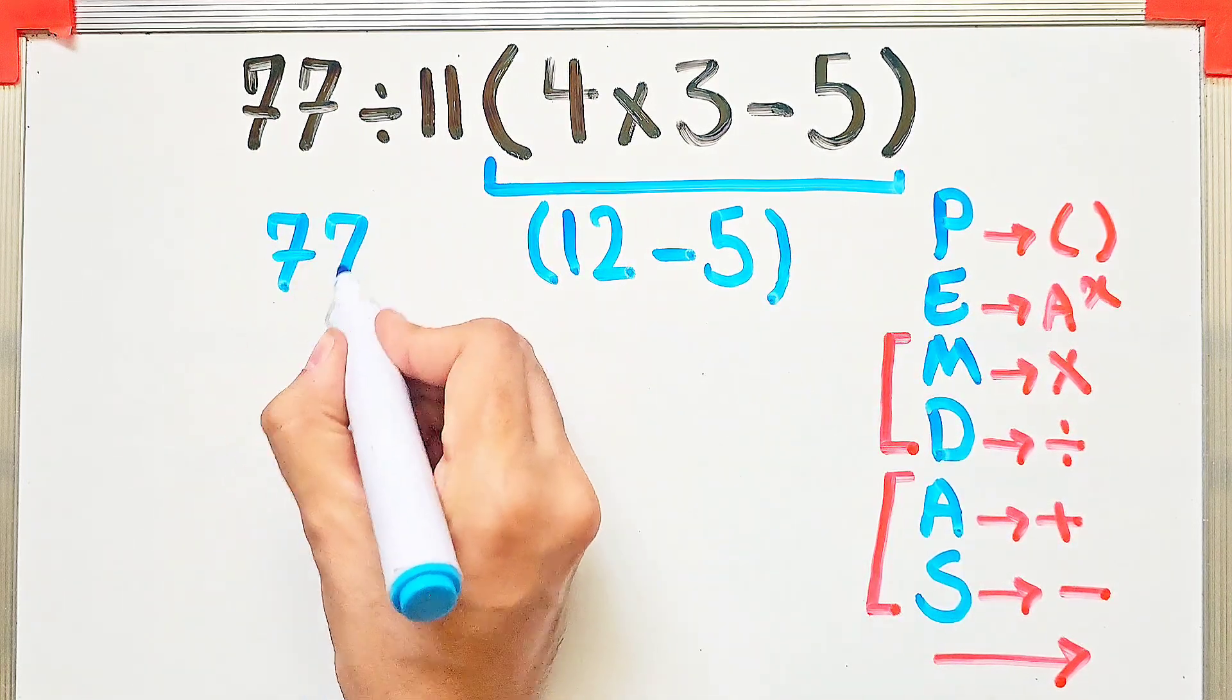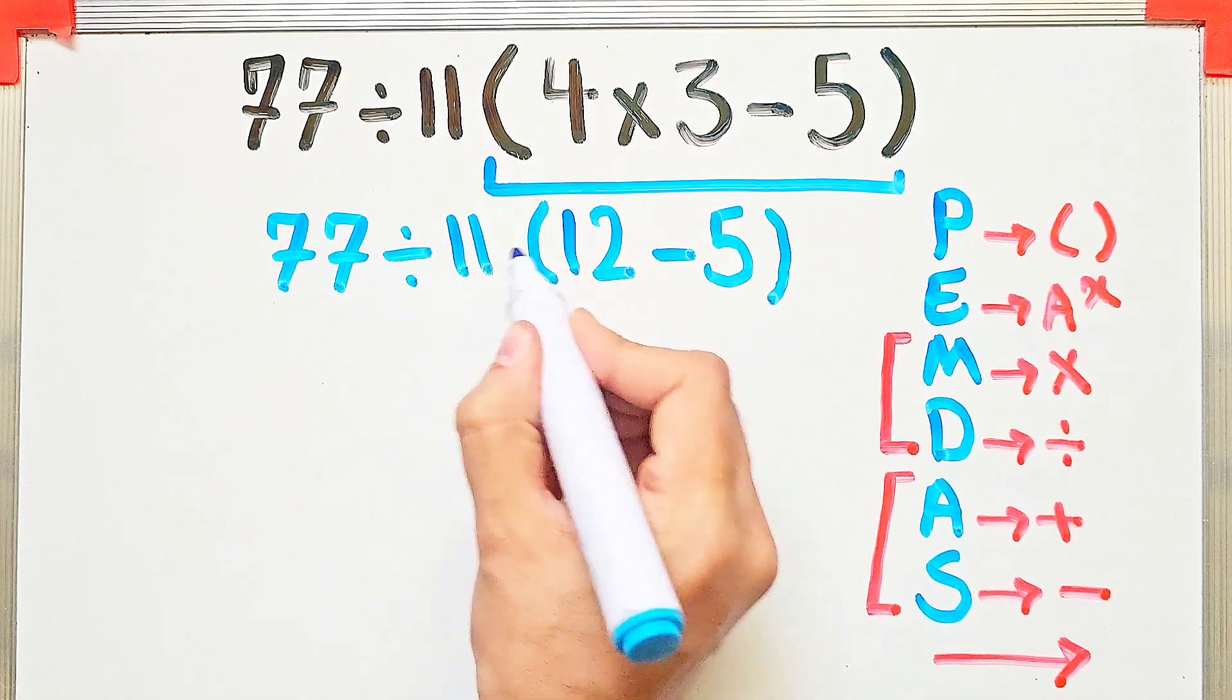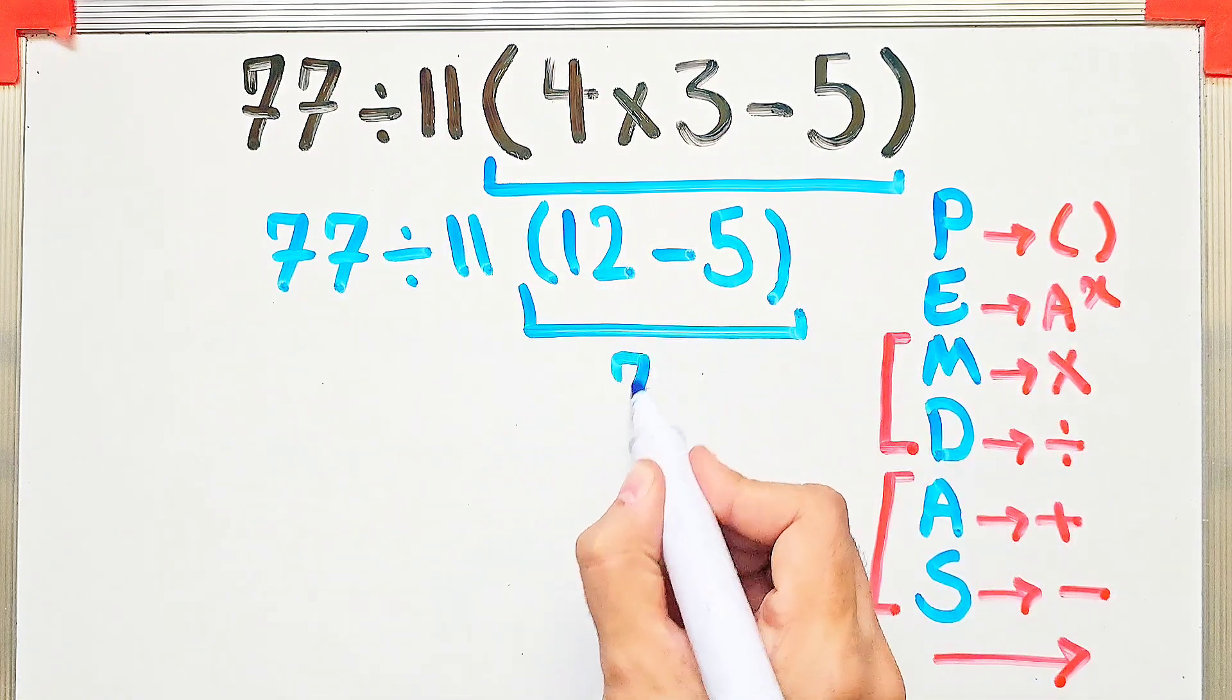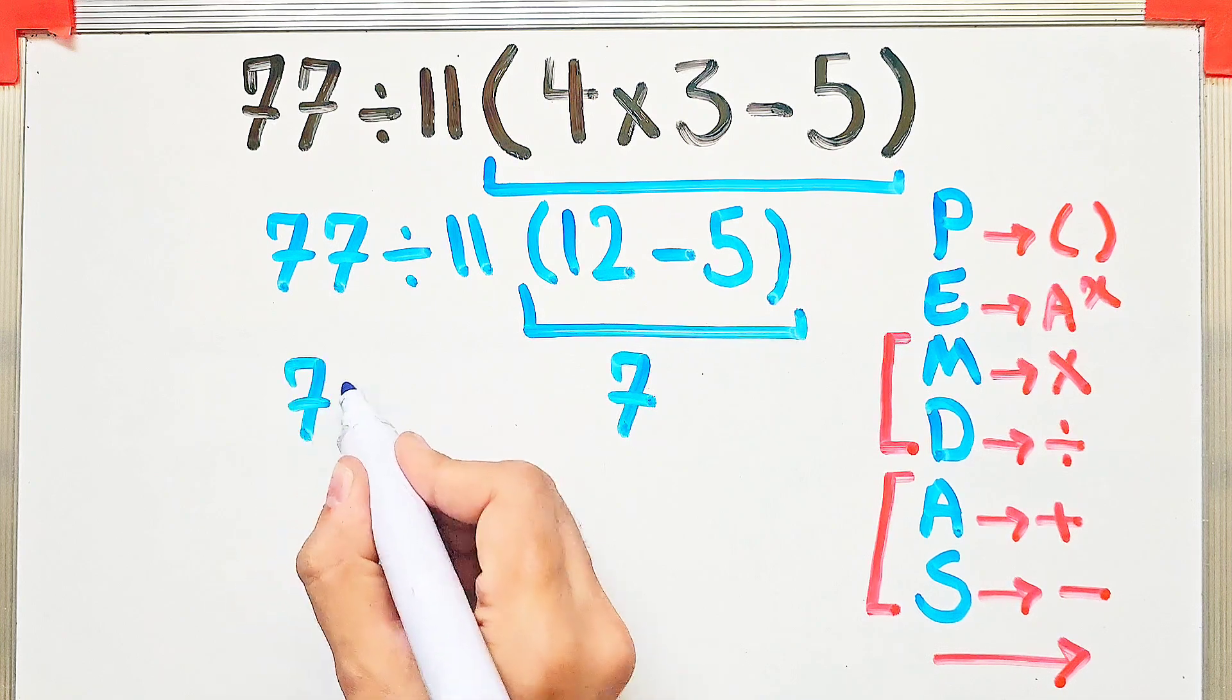We have 12 minus 5 in the parentheses, and the question is 77 divided by 11 then times 12 minus 5. Again we simplify the parentheses: 12 minus 5 equals 7. So 77 divided